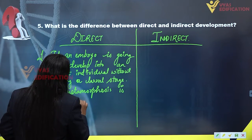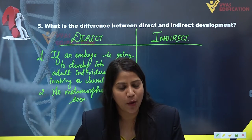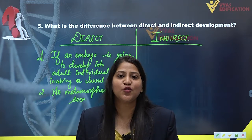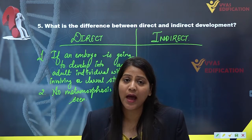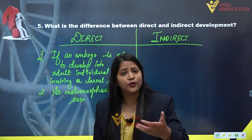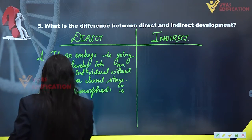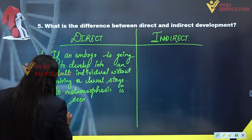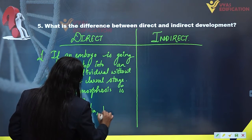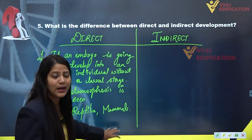No metamorphosis is seen in the animals that exhibit direct development, as metamorphosis is a phenomenon of larva becoming an adult individual. If larva is present, it has different food requirements. Examples of direct development include reptilia and mammals — we humans are also included in class Mammalia.